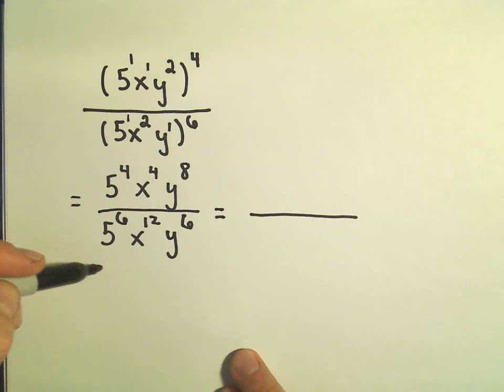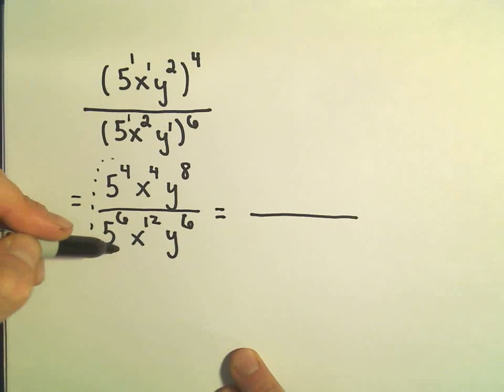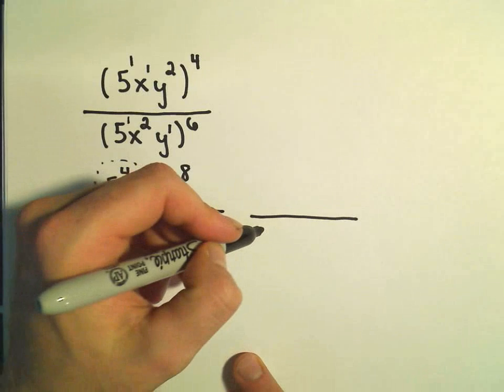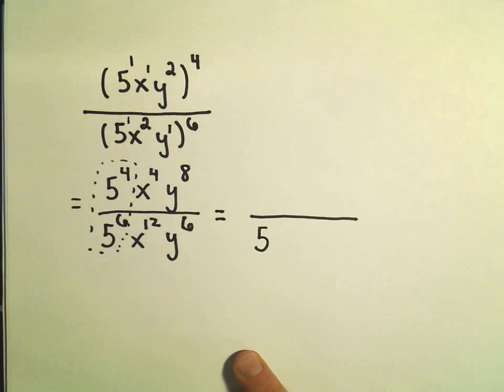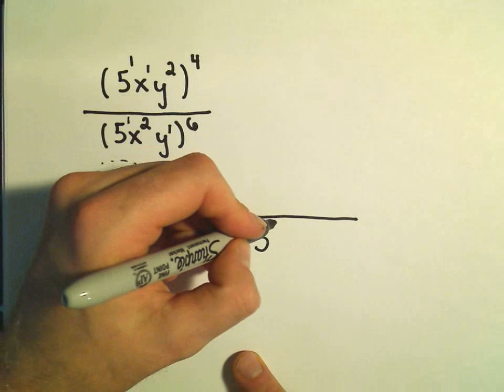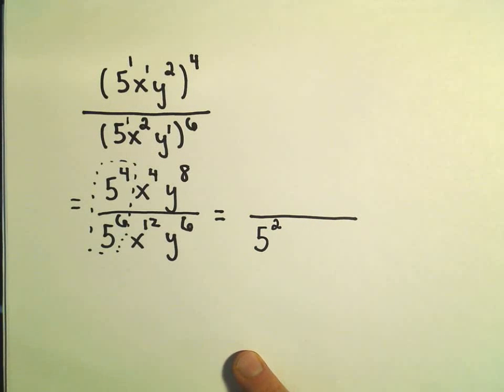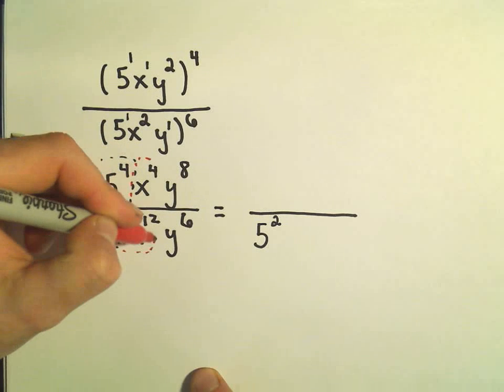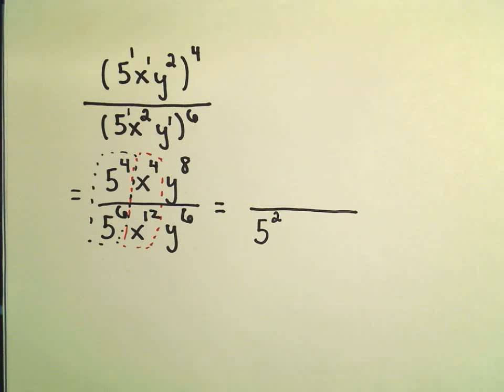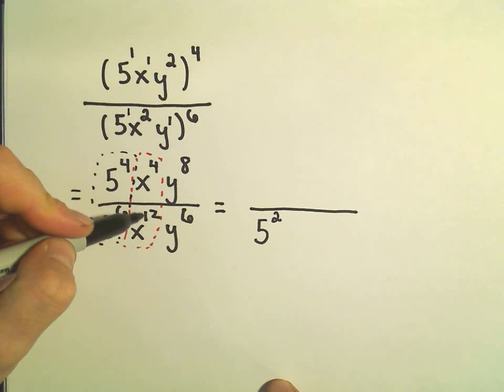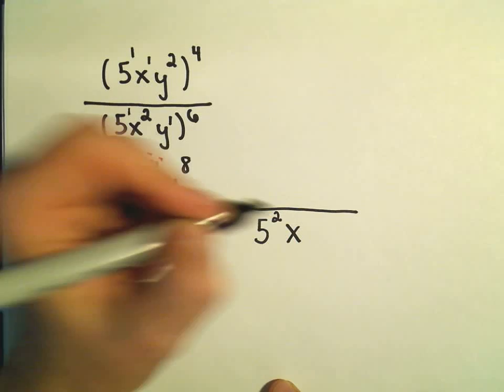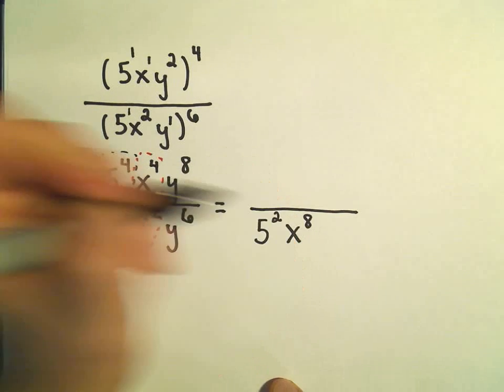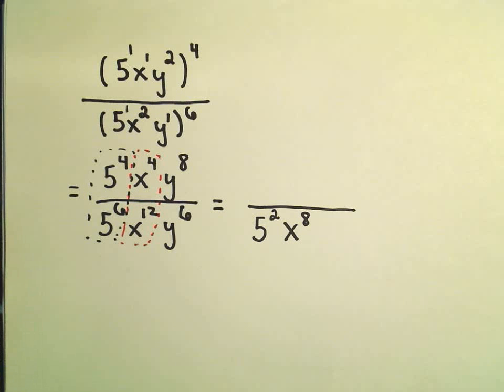So I look at my 5s. I'm looking at my 5s. I have like bases, so I can combine them. I look at the exponent. Well, 6 is bigger than 4. So the 5s are going to stay on the bottom. If I take 6 minus 4, that's going to give me to the 2nd power. Likewise, I look at my x's next. So I have x to the 4th over x squared. Well again, the exponent of 12 is bigger than the exponent of 4. So the x's are going to stay in the bottom. If I take 12 minus 4, that gives me x to the 8th.